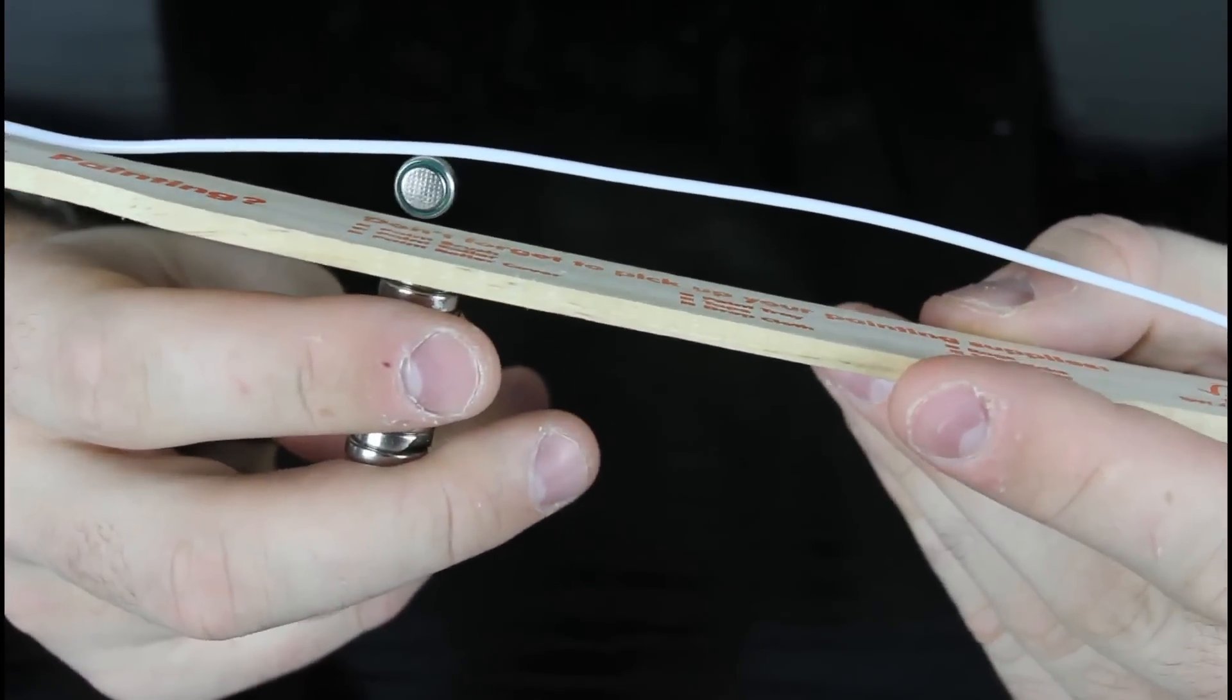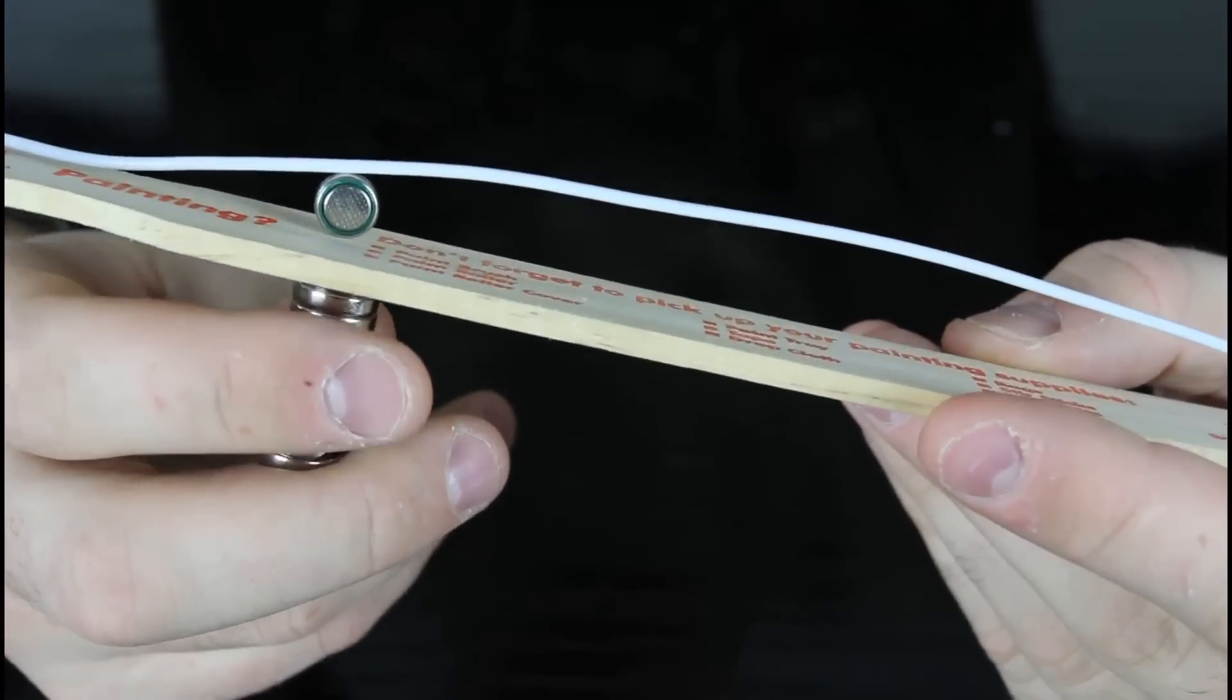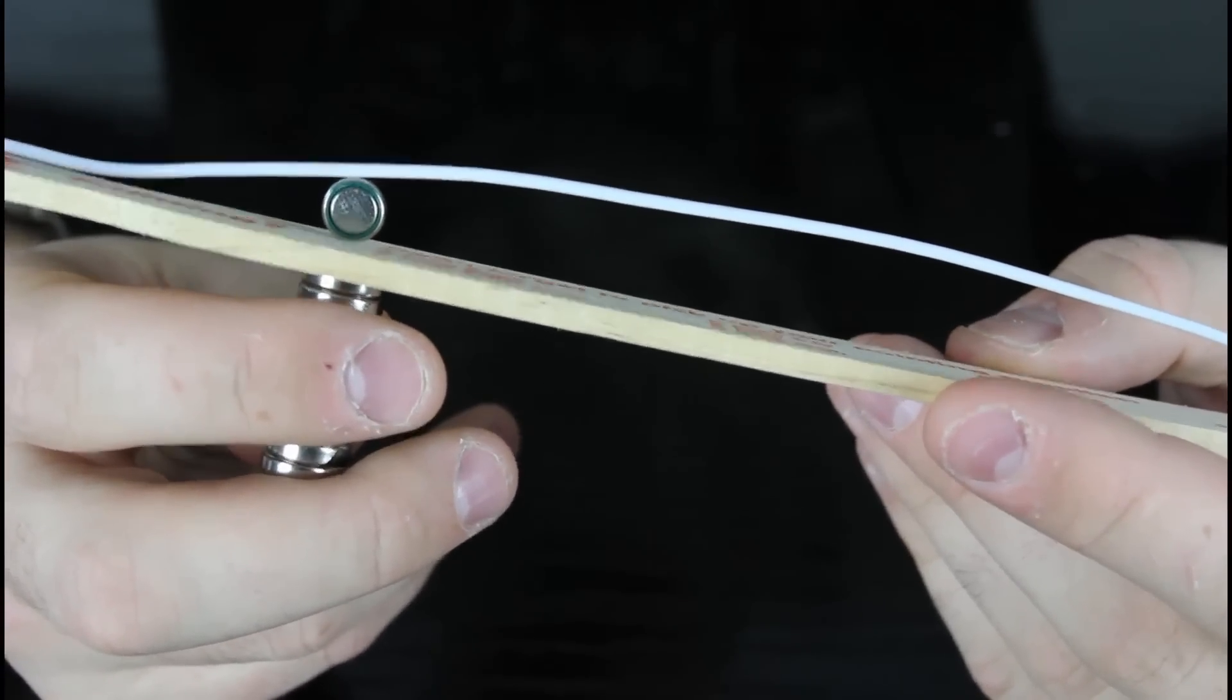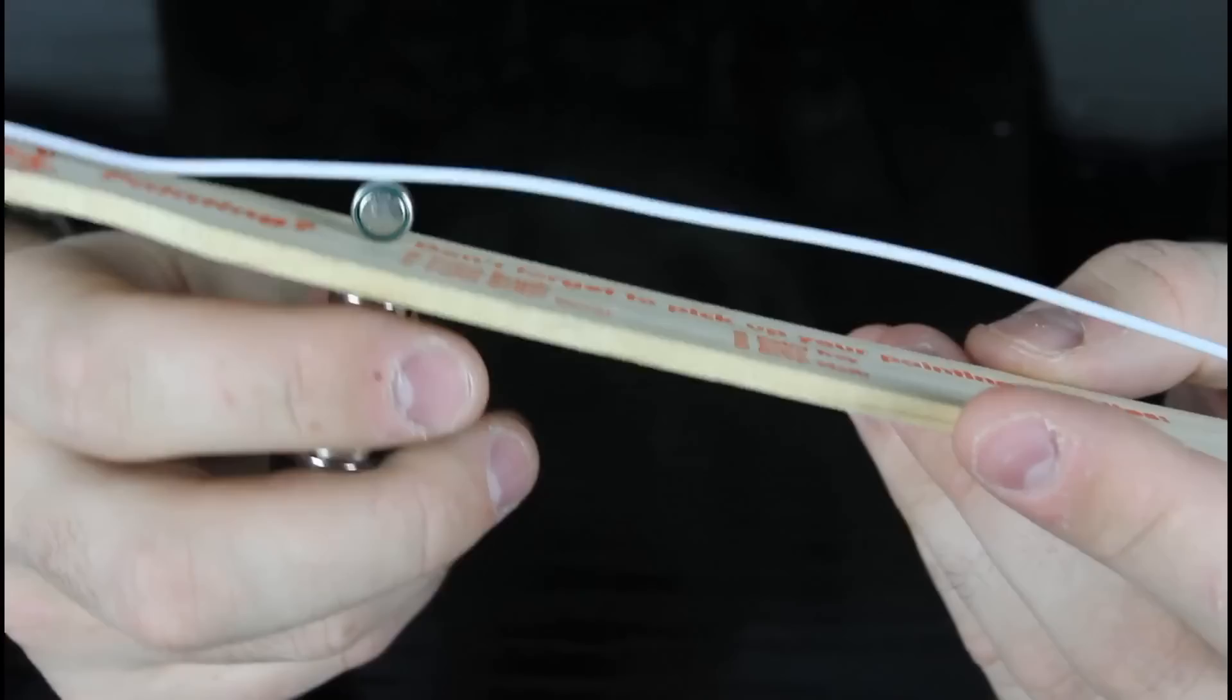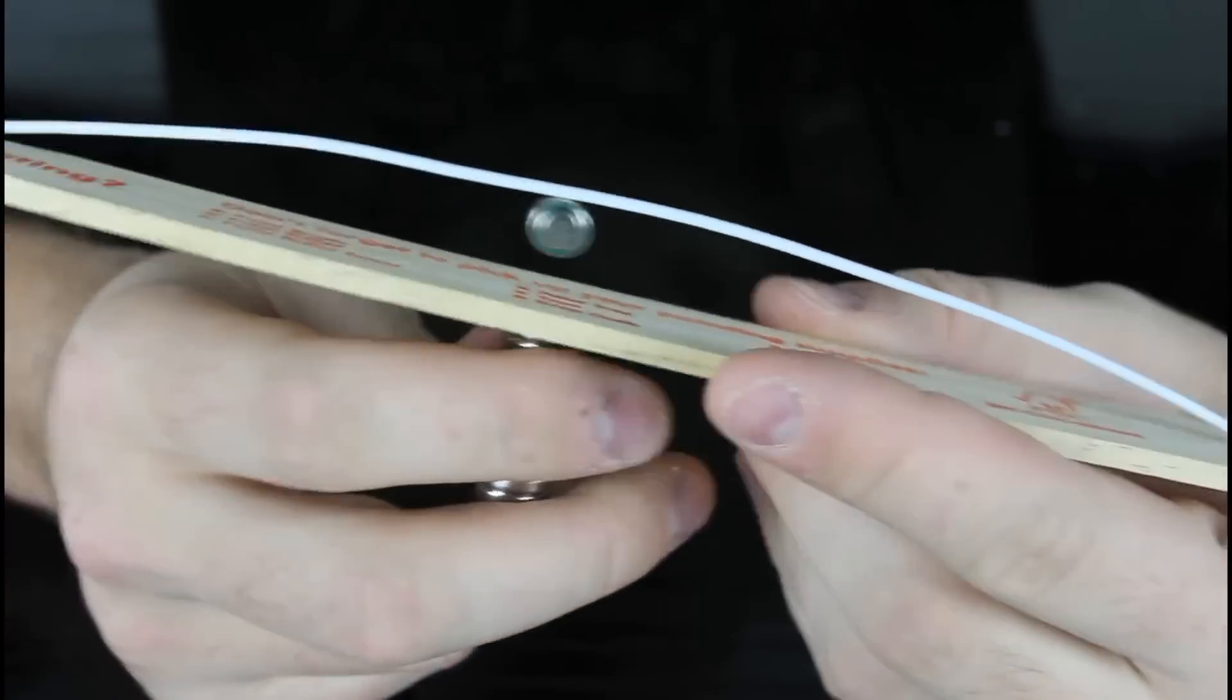See what I'm saying? Let's try to bring it down, touch the ruler again. You see the battery touching the ruler? But once we tend to pull up again, it's gonna just stay on the ruler.